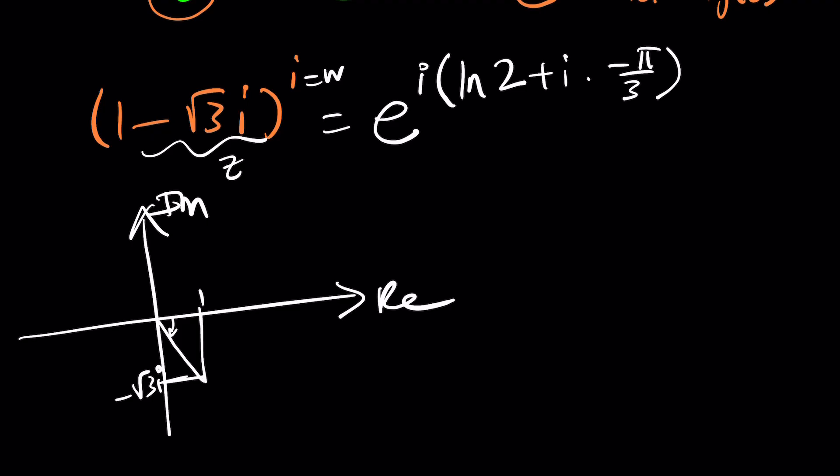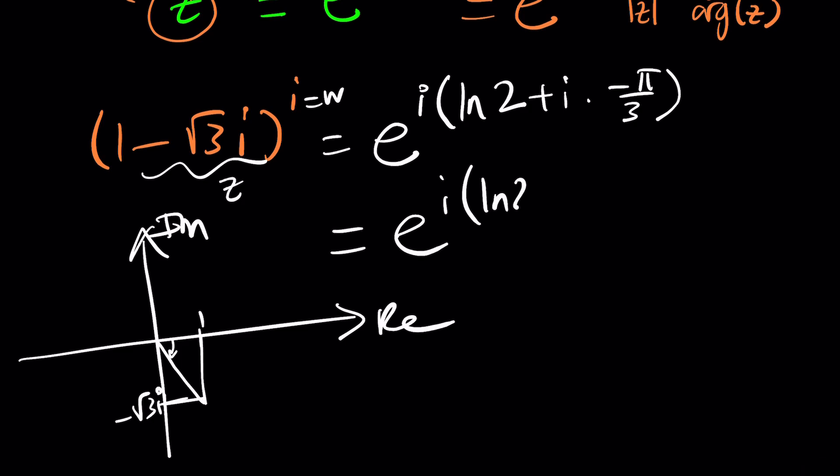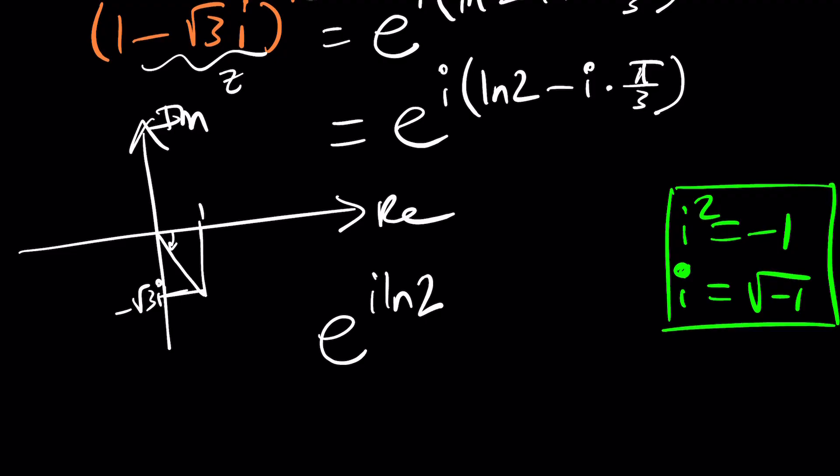Obviously there is more than one way to write it you can add 2 pi to it which will make it 5 pi over 3 but I'd like to stick to the principal argument which is this one. Great so are we done? Not yet because we still have to simplify this. Best way to do it is just distribute so let's go ahead and simplify inside the parentheses first and when we distribute we're going to get e to the power i ln 2 and one thing to remember, i squared is negative 1 because i is the square root of negative 1. So if you distribute this you're going to get i squared which is negative, double negative will make a positive, which gives us pi over 3.